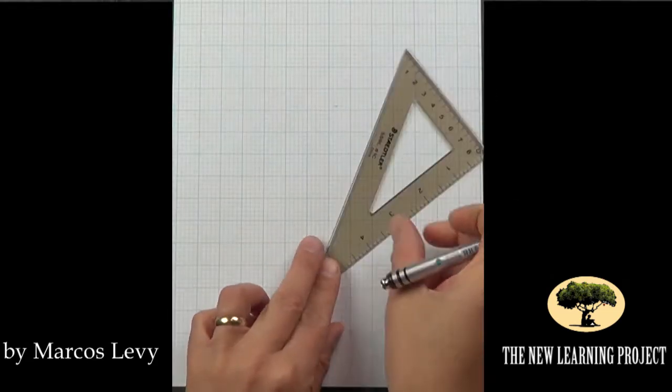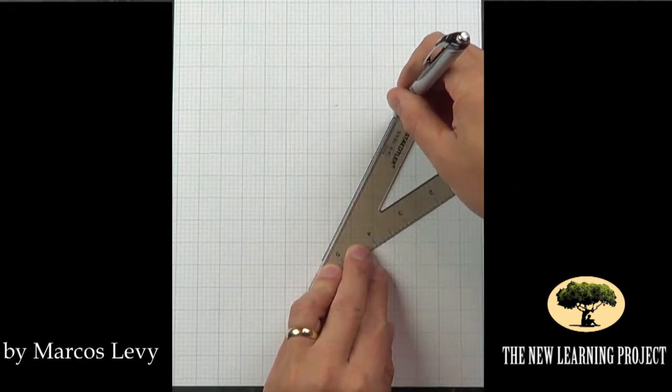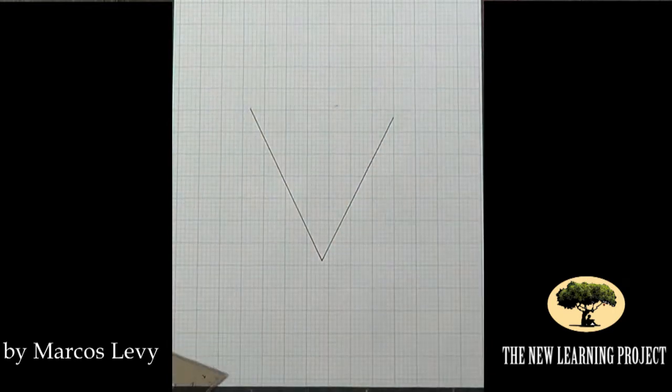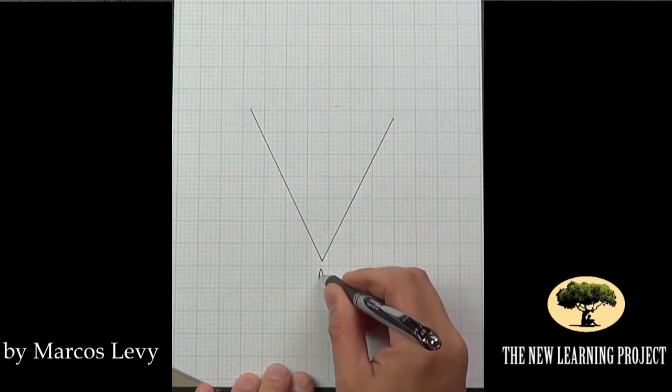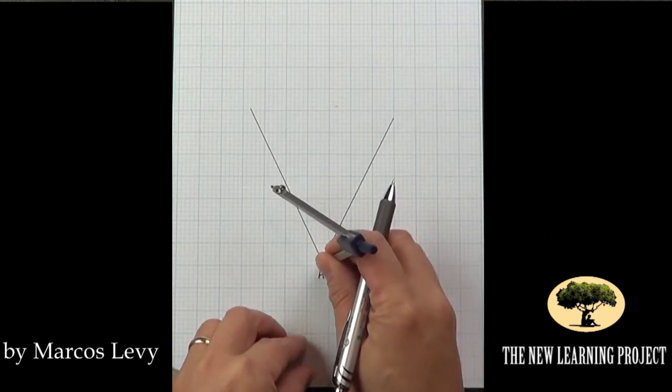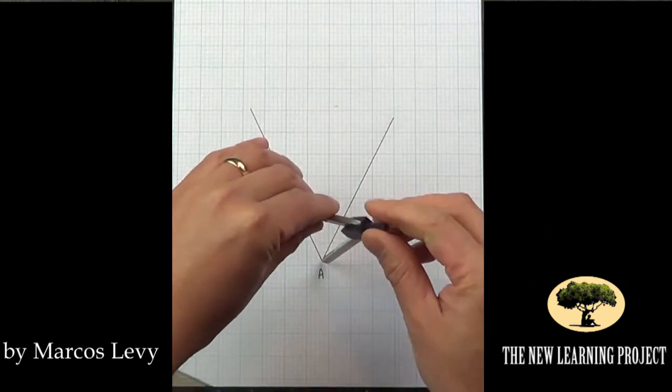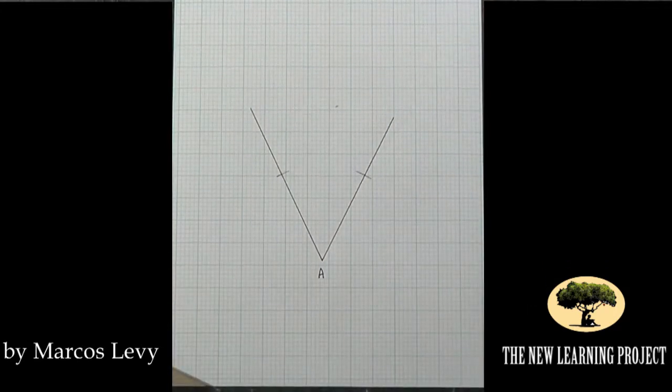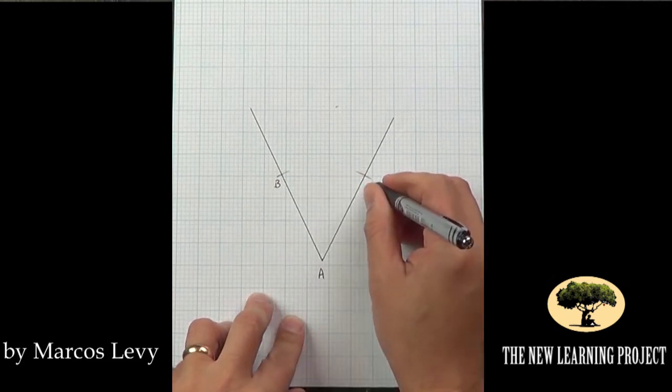First thing we need is an angle here and that angle are two rays that join at vertex A. Next thing we'll do is open our compass to a length and mark off two equal lengths, one here and one here. I'm going to call those two points B and C.